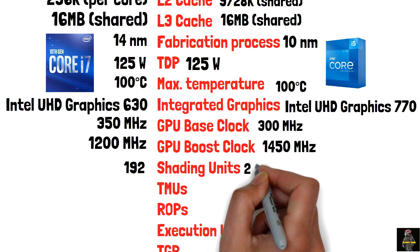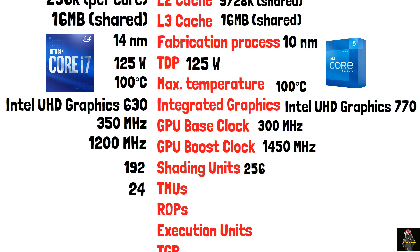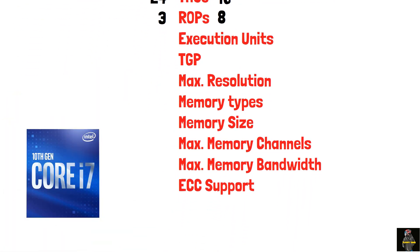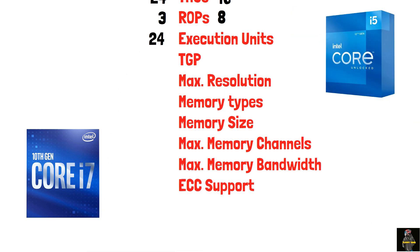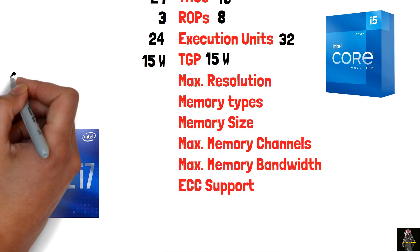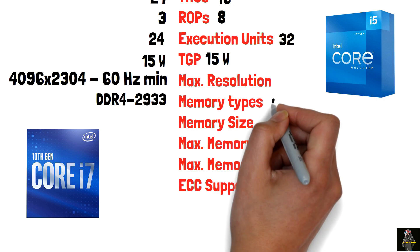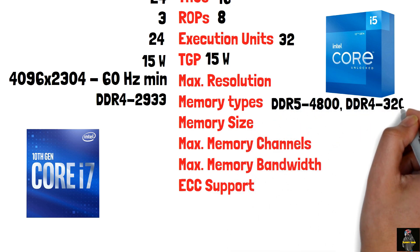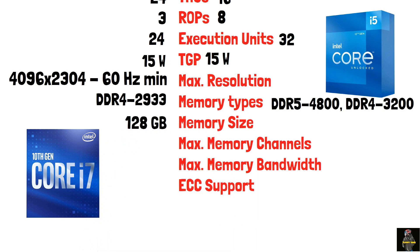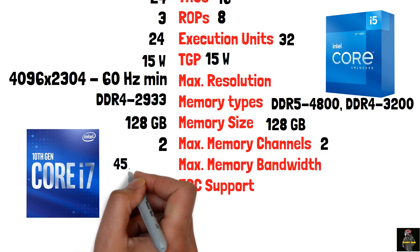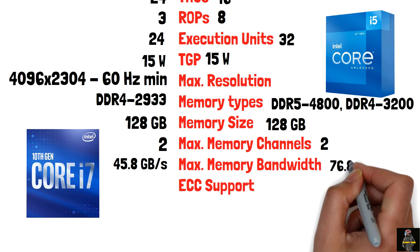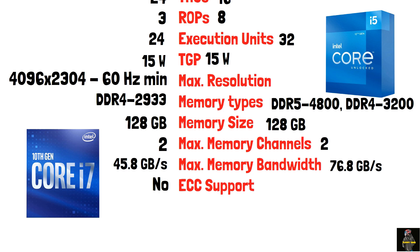Shading units are 192 versus 256, and execution units are 24 versus 32. The i7-10700K supports DDR4-2933 memory up to 128 GB with 2 channels and 45.8 GB/s bandwidth. The i5-12600K supports DDR5-4800 or DDR4-3200 up to 128 GB with 2 channels and 76.8 GB/s bandwidth.